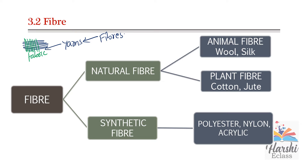Fibers are of two types: natural fibers and synthetic fibers. Natural fibers are those which we get from plants and animals. Examples of animal fibers are wool and silk. Examples of plant fibers are cotton and jute.